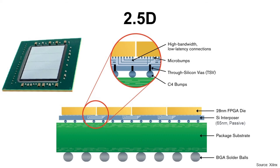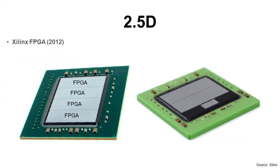This is an example of 2.5D for FPGAs. Xilinx's FPGA company breaks one big FPGA die into four pieces, then puts them on a silicon interposer to connect each other. Because if we make wafers with big FPGA dies, die yield will be low. But if we split into smaller dies, die yield will be better. In 2012, Xilinx announced the industry-first 2.5D package with silicon interposer for their FPGA product.